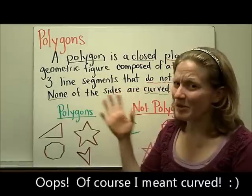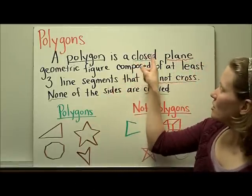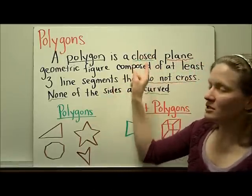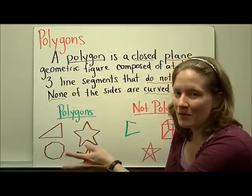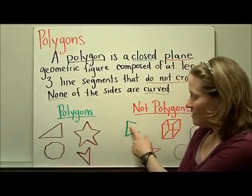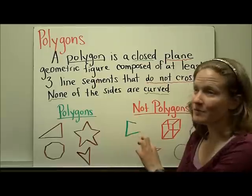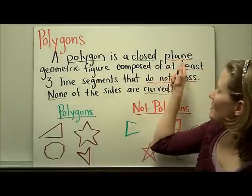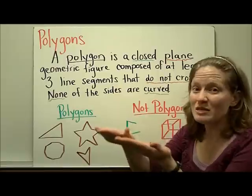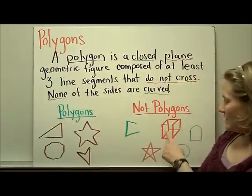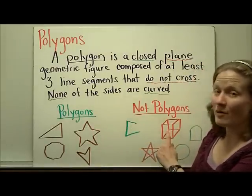Let's unpack that definition and understand each part. A closed shape means all sides are closed up — there are no holes where something could escape. This is not a polygon because the sides do not meet to close up into a shape. A plain figure means it's on one plane, basically 2D. This 3D shape would not be an example of a polygon.